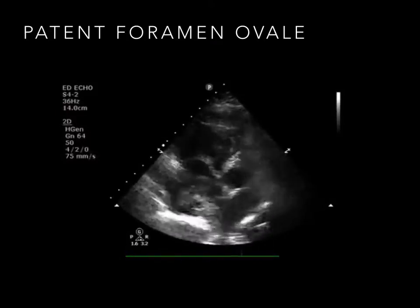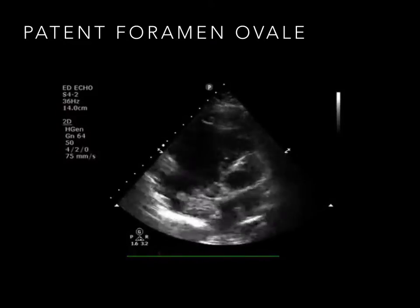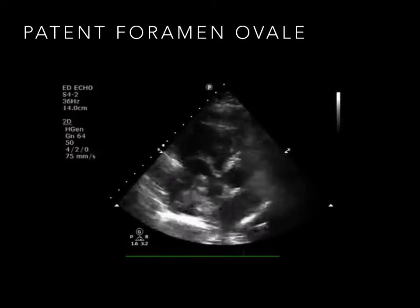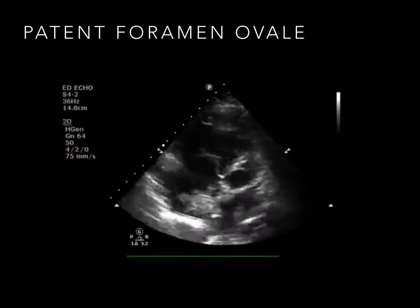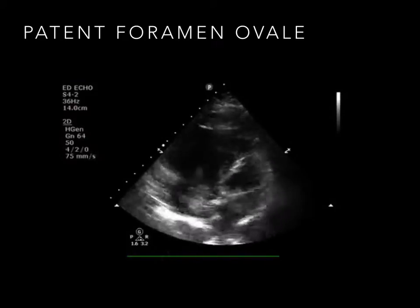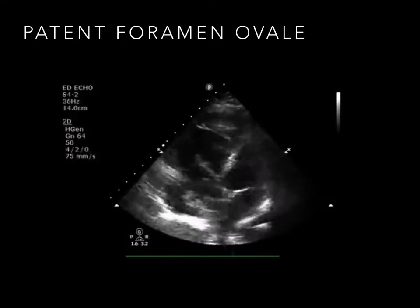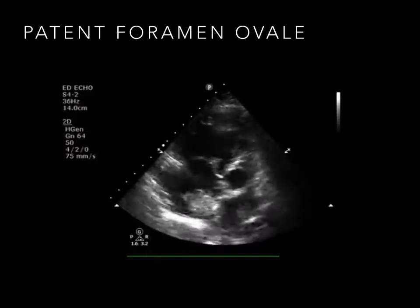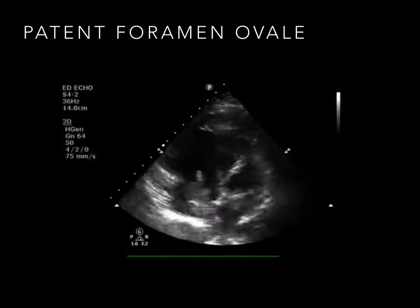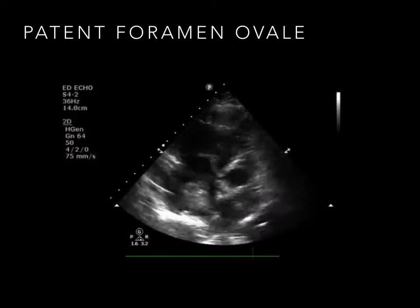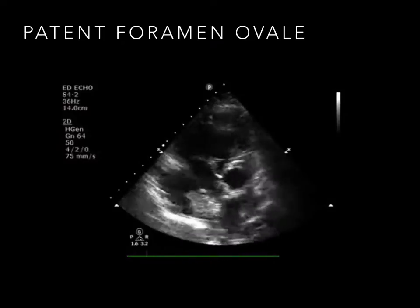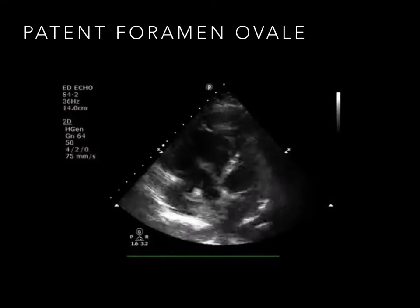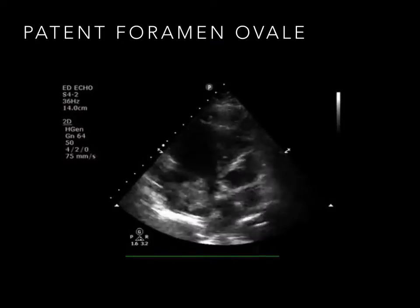PFOs are not typically large enough to be easily seen on bedside ultrasound. They are typically diagnosed with a bubble study or by using color Doppler to identify flow across the atrial septum in the subxiphoid view.